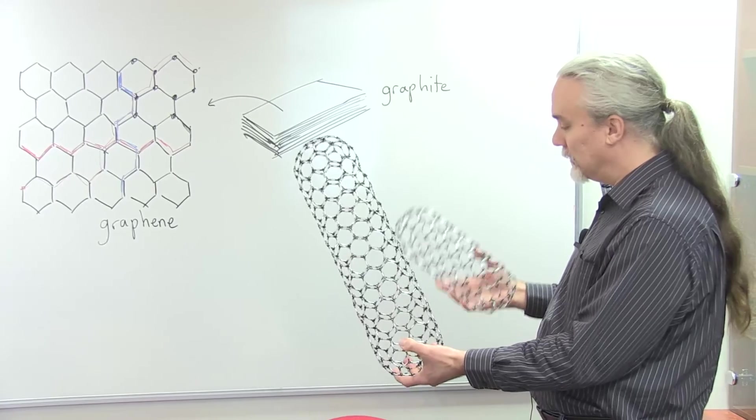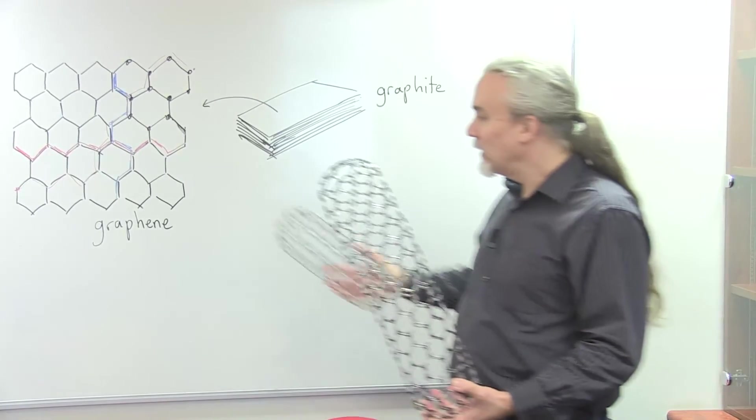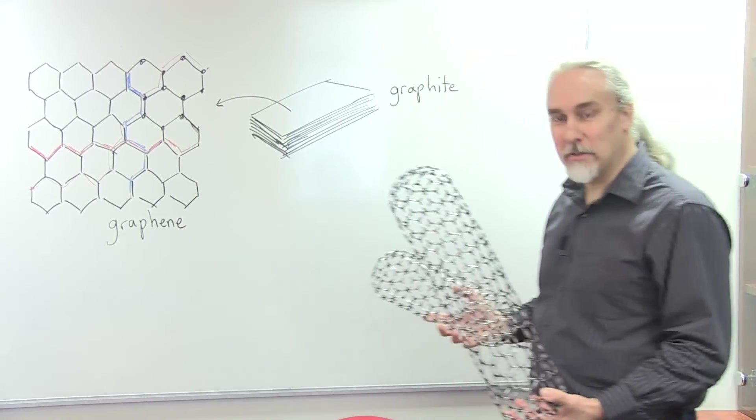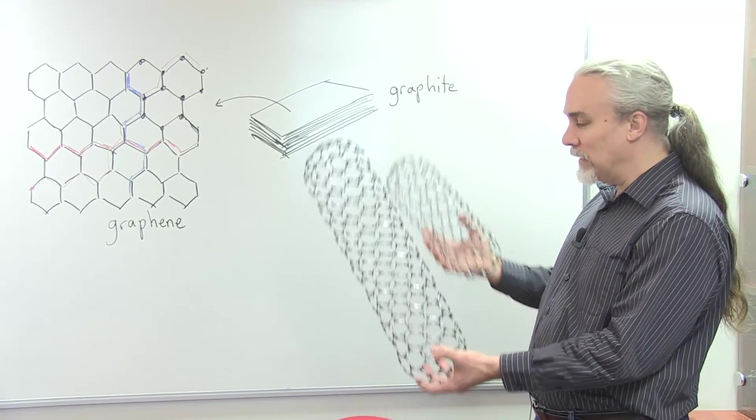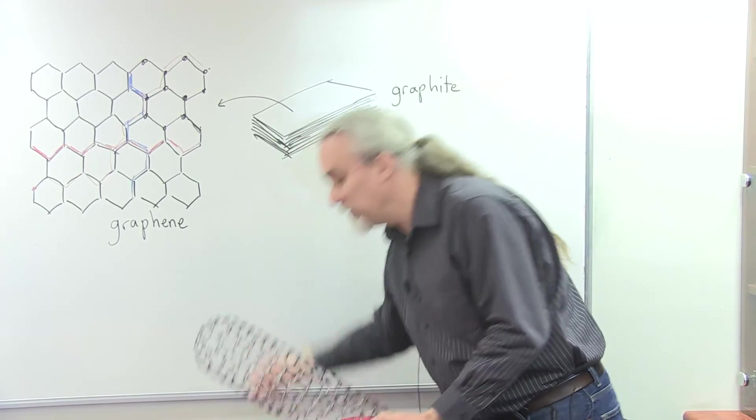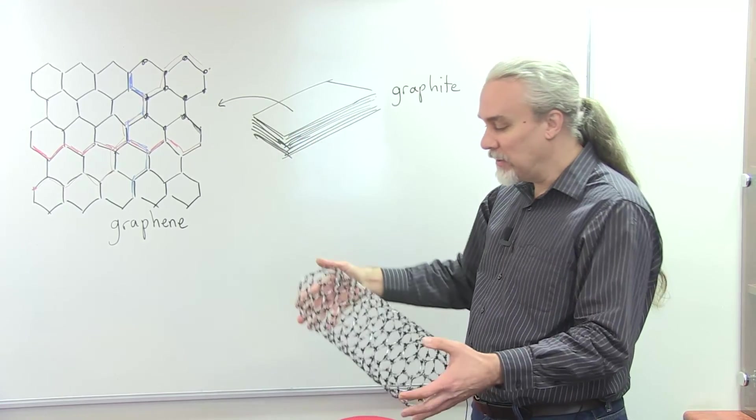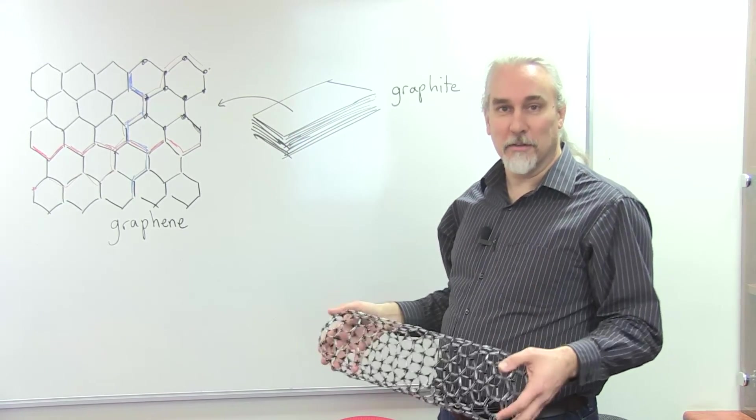But the idea is that taking a material that we know, graphite, which is made of graphene, sheets of graphene, if we make the structure a little bit different on the nanoscale, the way I say nanoscale is that the size of this nanotube, the diameter is about a nanometer, then the properties change and we get a new material. Let's take a look at the material. Thank you.